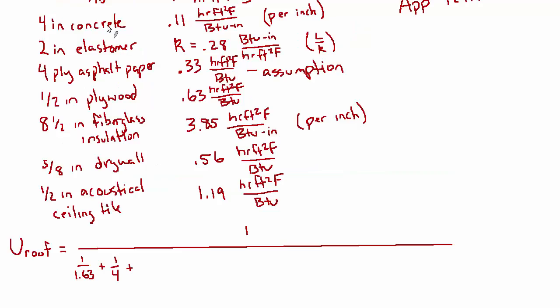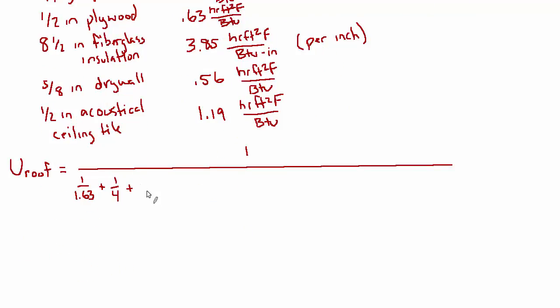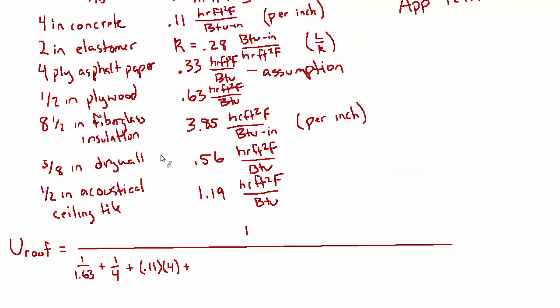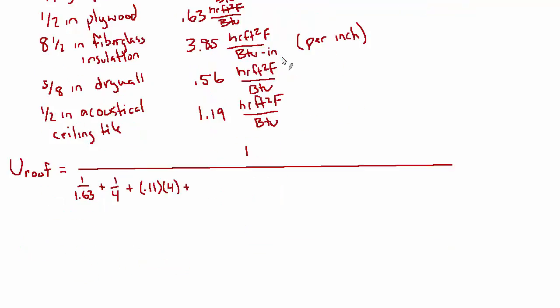And the next one we had was the concrete, which is on a per inch basis, and it's 4 inches of concrete. So 0.11 units of resistance per inch times 4 inches. And then next we have this elastomer where they gave us the K value, so this is going to be an L over K situation. It's 2 inches, so 2 inches over 0.28 plus 0.33, which is our assumption for this asphalt paper. And then 0.63 for the plywood, and then 3.85 times 8.5 inches for the fiberglass insulation, 0.56 for the drywall, and 1.19 for the acoustical ceiling tile.